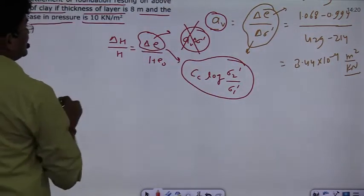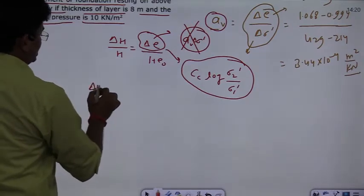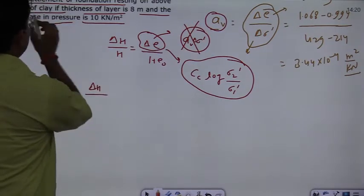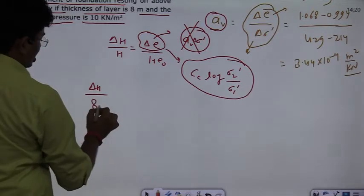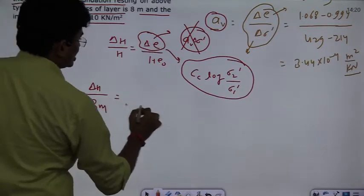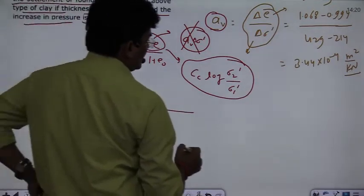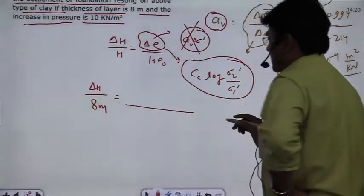Delta H, you need to find delta H divided by H. The thickness of clay is 8 meters. This is equal to CC. So CC is not removed. So CC should also be removed.